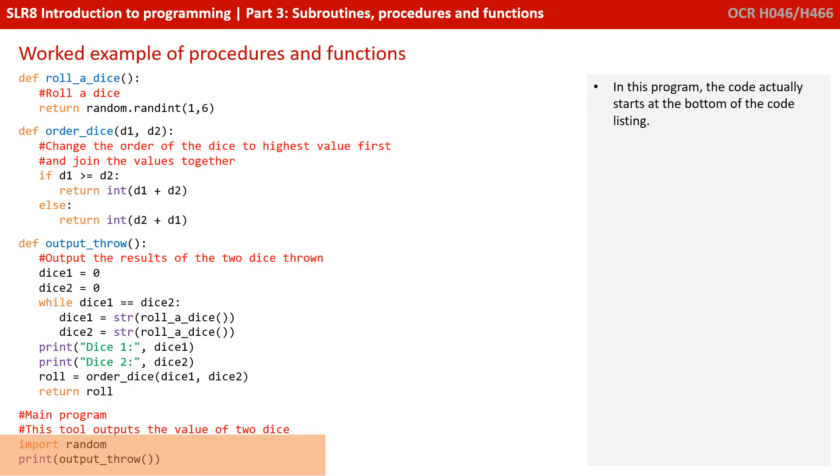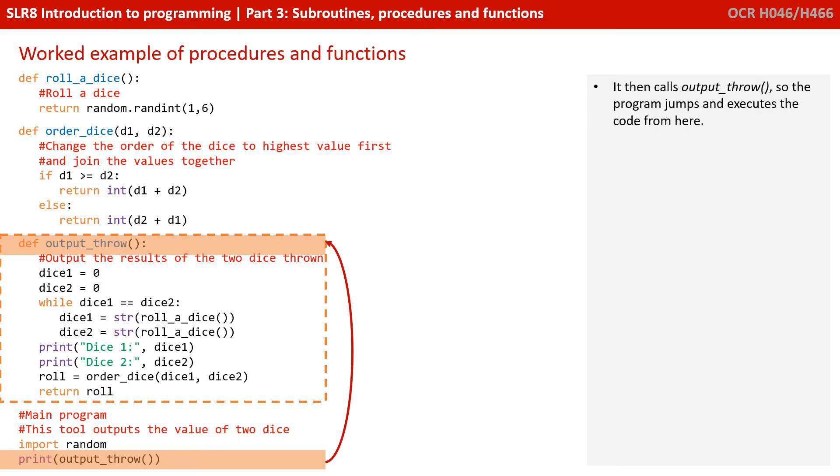So the first thing to notice here with this program is it actually starts towards the very bottom of the code listing, under the comments where it says main program. The rest of the program is constructed blocks or subroutines. Now you'll notice one of the very first lines of code that's run is print output throw. Output throw is a call to a subroutine. So what happens is when we reach output throw, we search the rest of the code for a subroutine with a matching name. We find one and so the code jumps to that section of the program and starts executing in sequence from that point on.